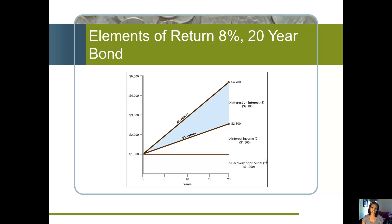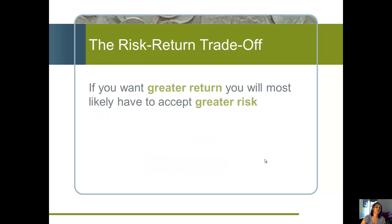Let's break down returns. Say we have either a 5% or an 8% return. This graph shows how much of that return comes from interest and how much comes from interest on interest. For a $1,000 investment, you see the recovery of principal, then the interest income, then the compound interest income. The higher the interest rate, the better the return, and earning compound interest instead of simple interest also significantly impacts total return.